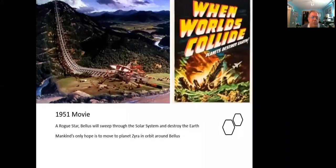This reminds me of this 1951 movie When Worlds Collide. Actually the plot was when a rogue star called Bellus swept through the solar system and destroyed the earth, and mankind had to build this magnificent rocket ship that you see in the picture here and launch it from a track as a kind of space arc.